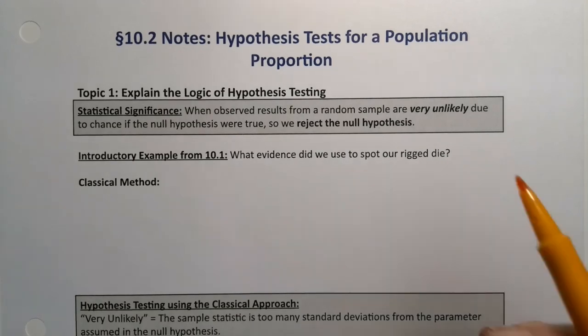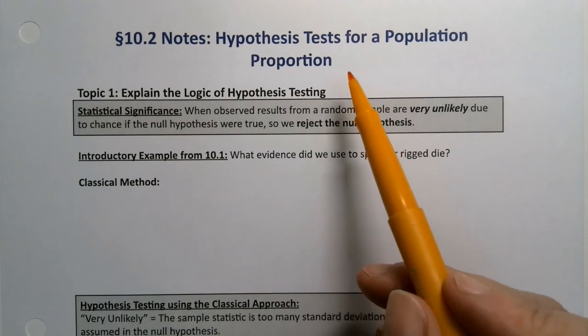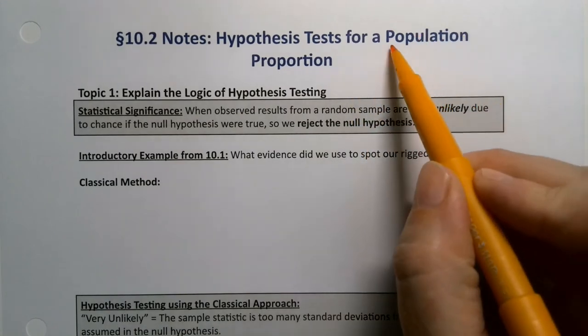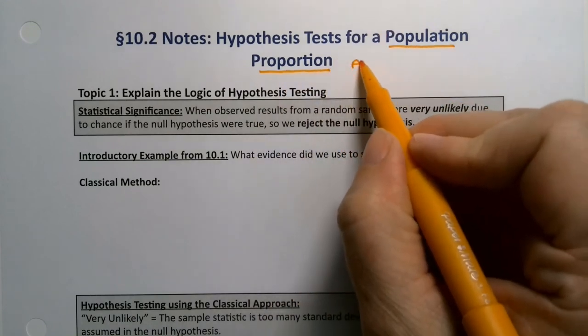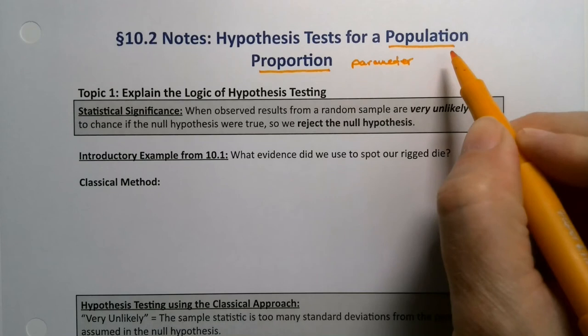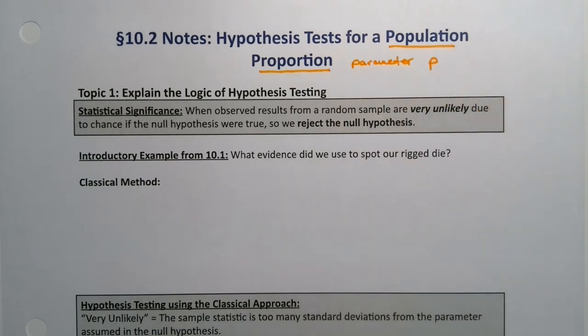In section 10.2 we're actually going to run our first hypothesis tests for a population proportion, which means that our parameter in this section is going to be p, the population proportion.